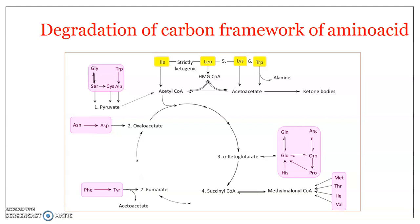The second one is the degradation of the carbon framework of amino acids. During amino acid catabolism or degradation, the hydrocarbon part of the amino acid gets broken down and ultimately gets converted to products that enter the Krebs cycle. We can see what the various amino acids are and what products are produced during the degradation of the carbon framework of specific amino acids.